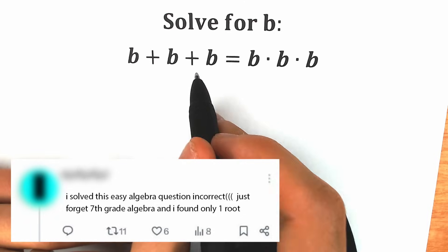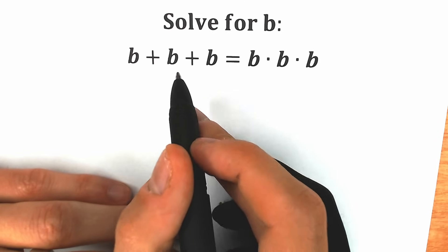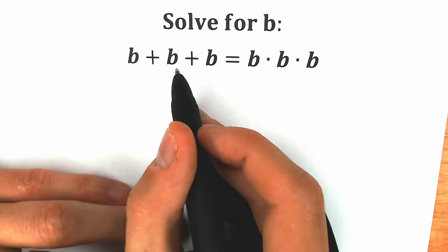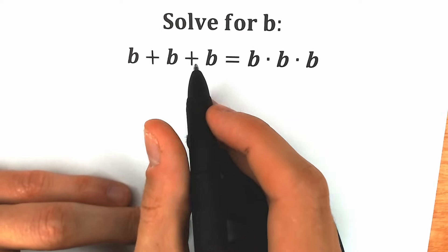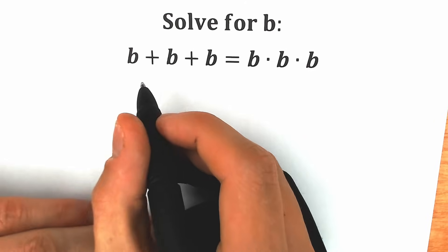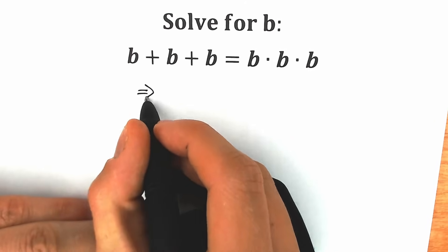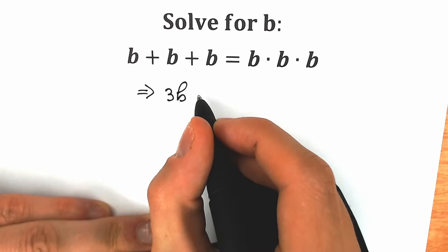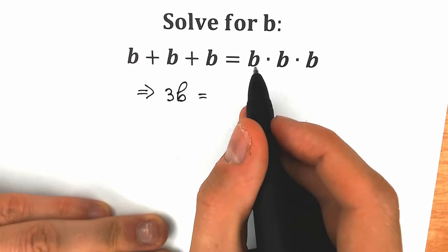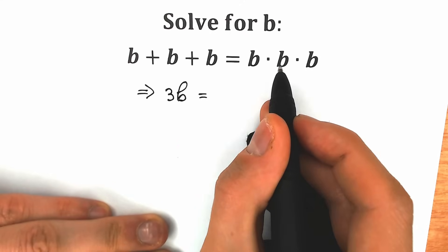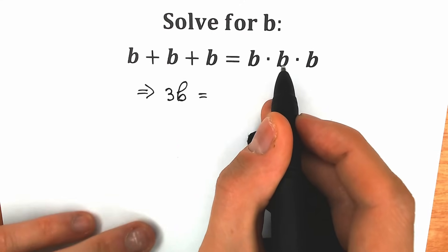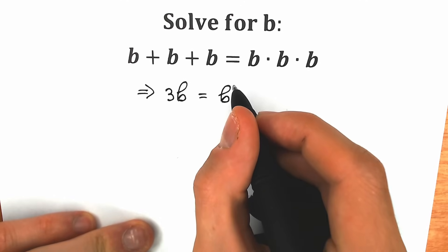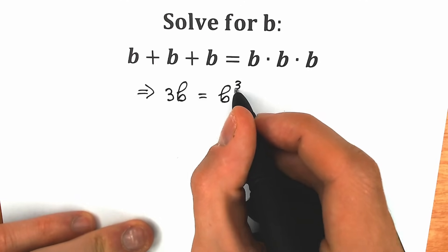First of all, don't be scared about this expression on both sides. On the left side, b plus b plus b — we are talking about 3b. On the right side, b times b times b — we have b squared times b, we have b cubed. So 3b equals b cubed.